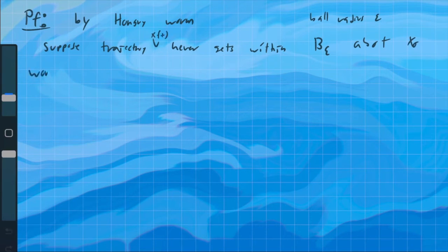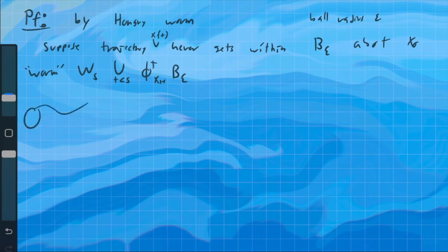So now let's define a worm as a set in this thing, Ws, which is the union for all times less than s, of what you get when you translate this ball around by time t. Essentially, you take the ball and you extrude it out into a worm.